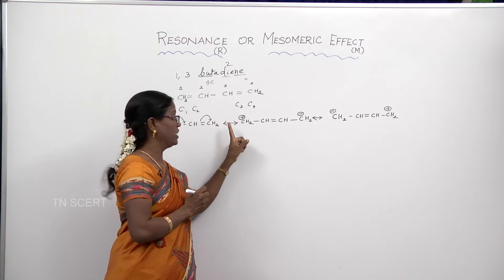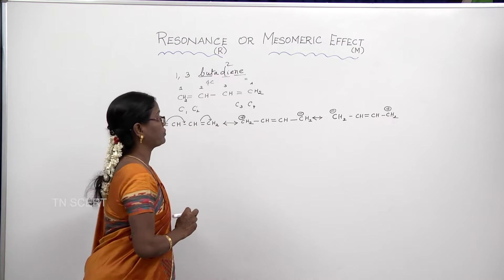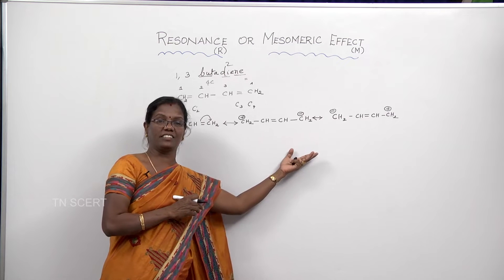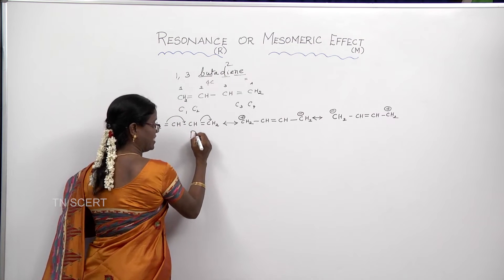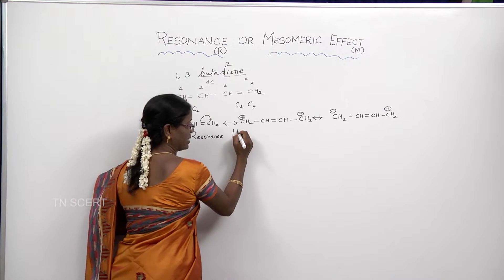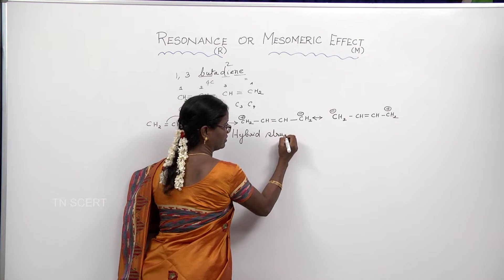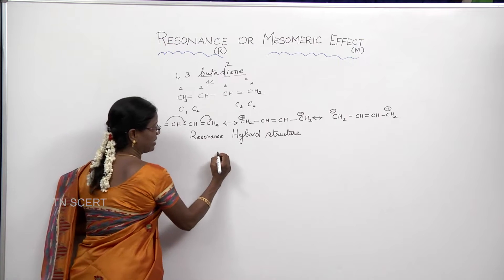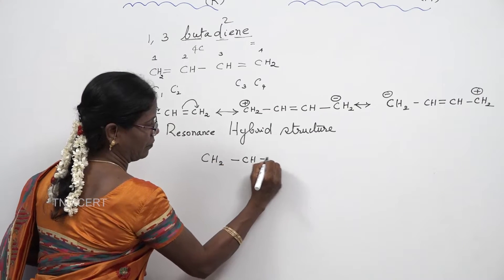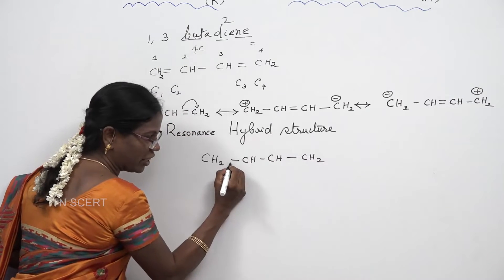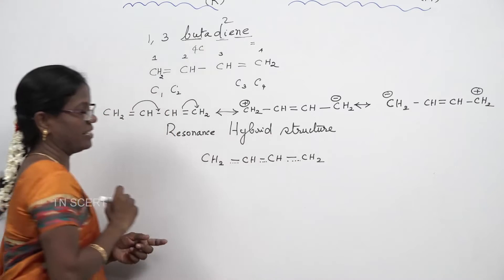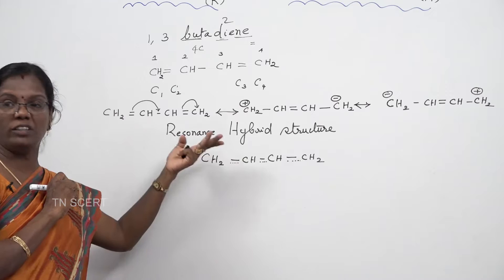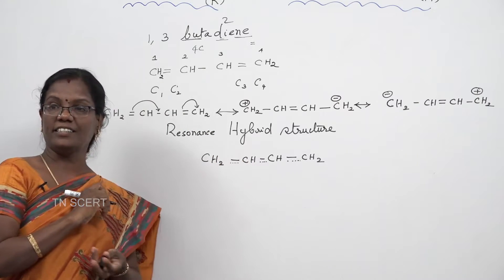Even with these resonating structures, we cannot fully explain all properties of this molecule. So there is a resonance hybrid structure, which lies in between all these structures. In the resonance hybrid structure of 1,3-butadiene, all the pi electrons are delocalized throughout the molecule. Using this resonance hybrid structure, all the properties of 1,3-butadiene can be explained.